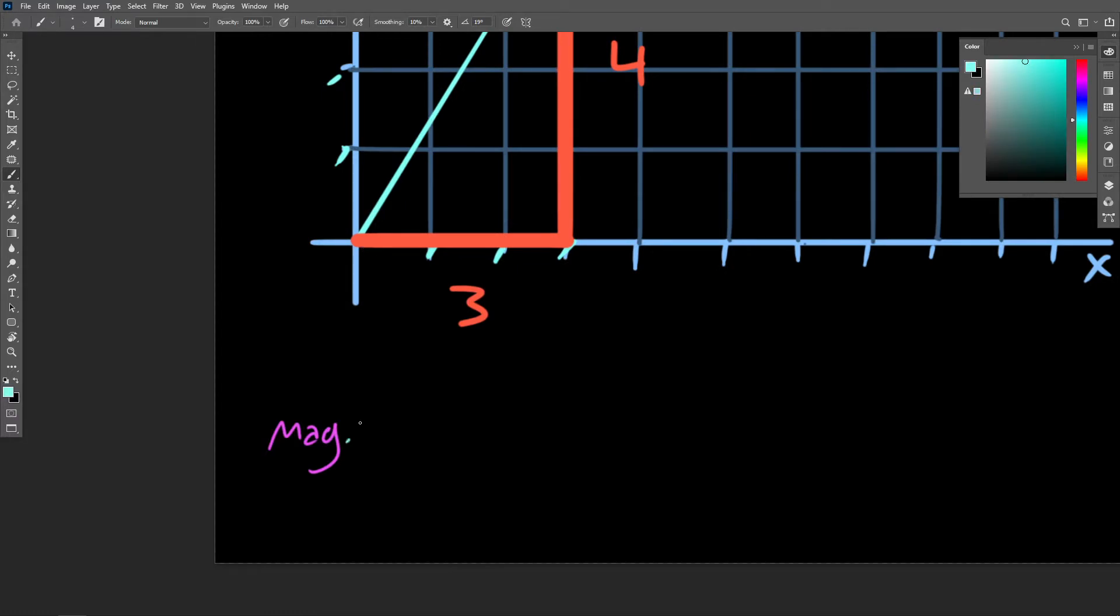So we can say that the magnitude of vector a is equal to the square root of 3 squared, that's one of the legs of the right triangle, plus 4 squared, that's the other leg.